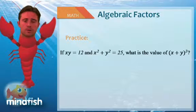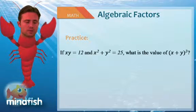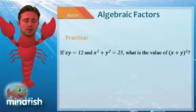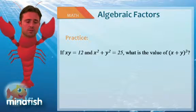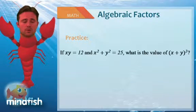xy is 12, so 2xy is 24. And x squared plus y squared is 25. So x plus y squared would be 24 plus 25, or 49.